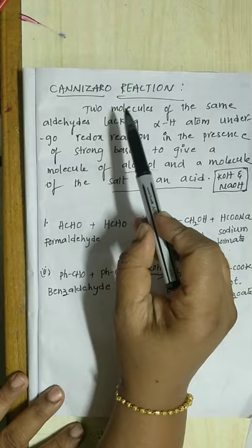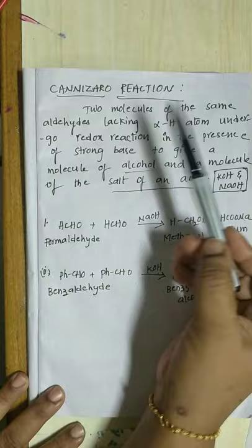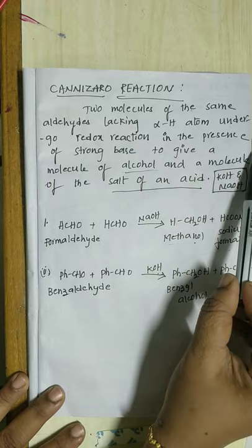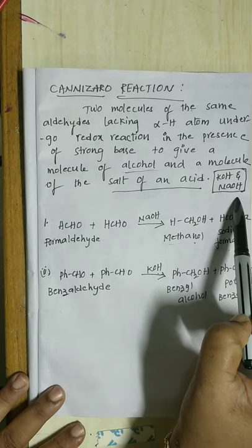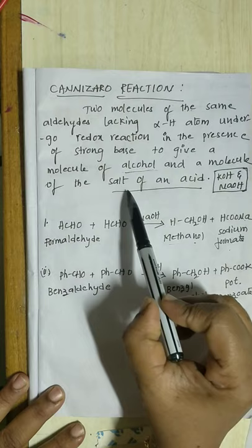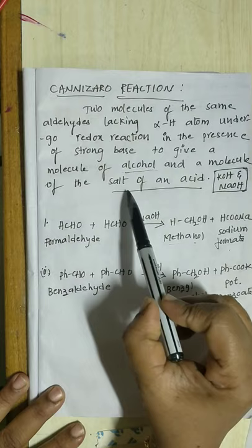In summary, the Cannizzaro reaction means two molecules of the same aldehyde without alpha hydrogen atoms react with each other in the presence of a strong base — potassium hydroxide or sodium hydroxide — to form one molecule of alcohol and another molecule of the salt of an acid. Thank you students.